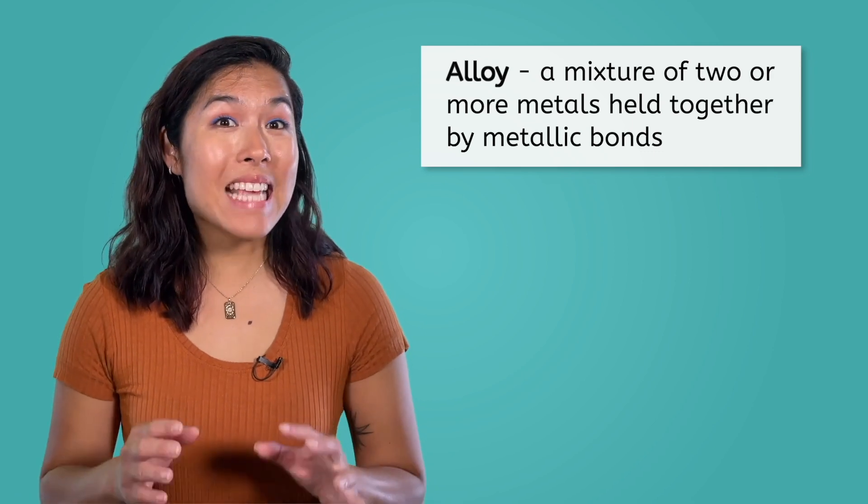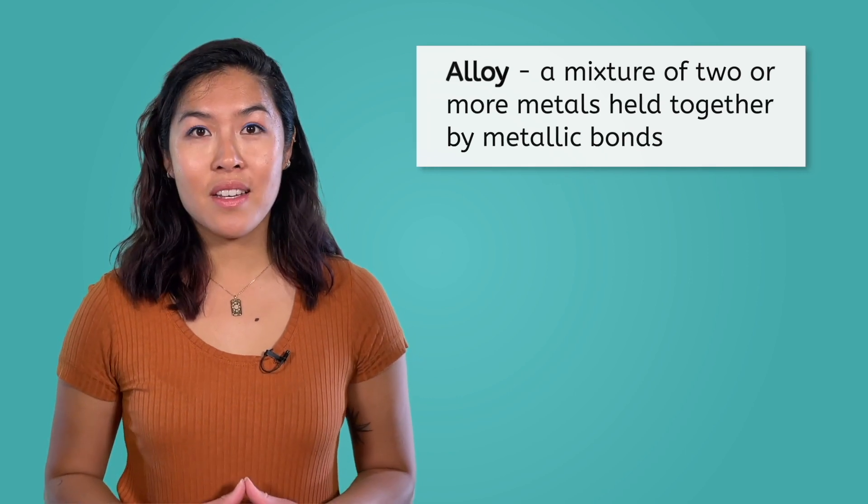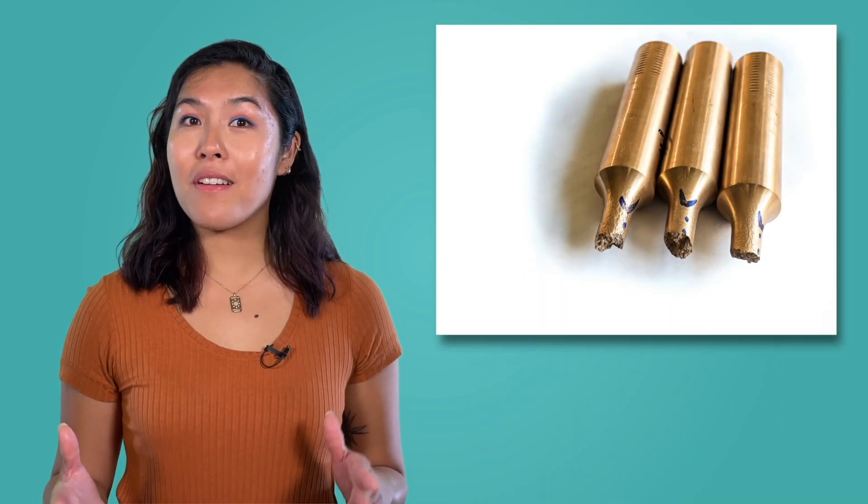However, oftentimes these alloys have stronger properties than pure metals. Examples of alloys include bronze, which is made of copper and tin, and brass, which is made of copper and zinc.